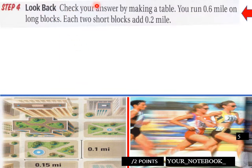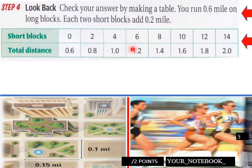So after solving, look back. Check your answer by making a table. You run 0.6 miles on long blocks, that's a fixed number there. We want to know how many short blocks you need to run to make it a 2 mile run. So each 2 short blocks add 0.2 miles.